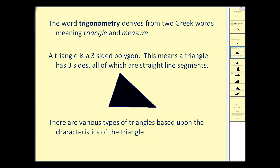Let's now talk about triangles. The word trigonometry derives from two Greek words meaning triangle and measure. A triangle is a three-sided polygon, which means a triangle has three sides, all of which are straight line segments. And there are various types of triangles based upon the characteristics of the triangle.